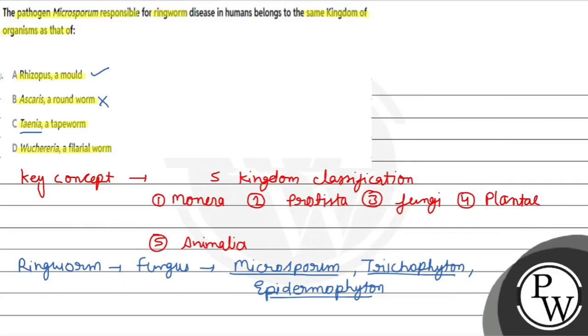And what's the disease? Taenia is a tapeworm. This is also animal kingdom. This is Wuchereria, which causes elephantiasis. This is what is called Wuchereria bancrofti. It is called Elephantiasis. This also belongs to animal kingdom. These three are from animal kingdom.